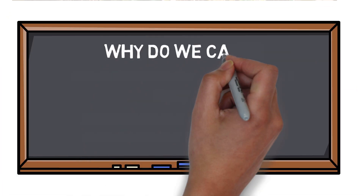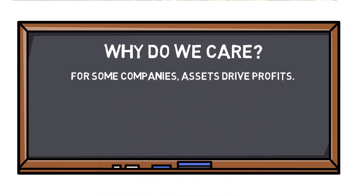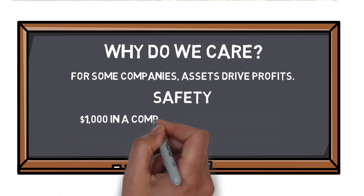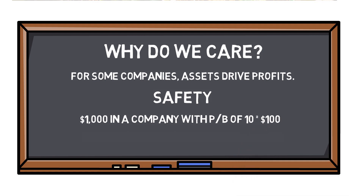Why does this matter? One reason is that for some companies, the primary drivers of profits are assets. You therefore want to get as much book value per dollar you invest as you can get. Another reason is that while we never invest in companies that we expect to fail, some companies do. If a company closes and has to sell all of its assets, the money made from those sales are divided between the shareholders. If you invested $1,000 in a company with a price to book of 10 that suddenly shut down and had to sell its assets, you can expect to only get $100 of your investment back — a 90% loss, which is substantial.